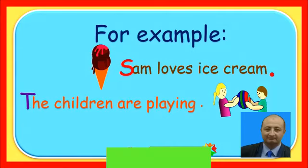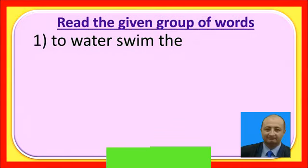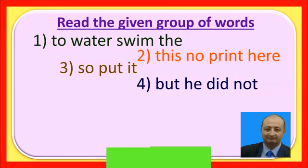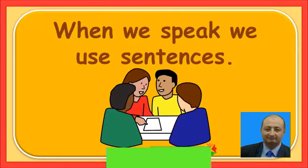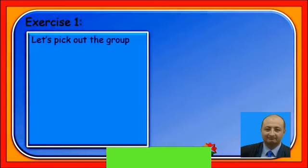Let's take another example: 'The children are playing.' Here the letter T is written in capital form and the sentence ends with a full stop. Now consider the group of words: 'to water swim.' These groups of words do not make complete sense, do not begin with a capital letter, nor end with a full stop, so these are not sentences.